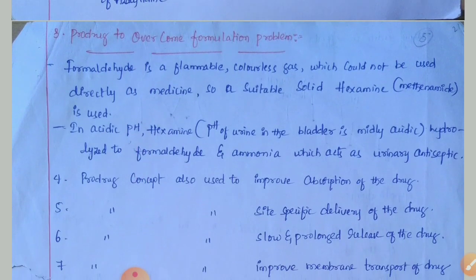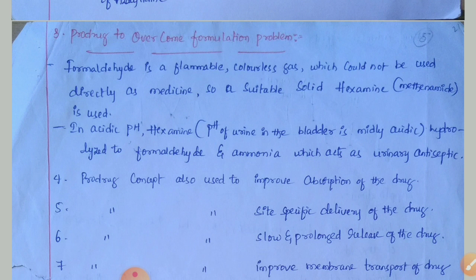Prodrug to overcome formulation problems: formaldehyde is a flammable, colorless gas which cannot be used directly as medicine. A suitable solid — hexamine — is used instead. In acidic pH conditions, specifically the mildly acidic pH of urine in the bladder (pH 6.8), hexamine hydrolyzes to formaldehyde and ammonia, and the released formaldehyde acts as a urinary antiseptic.